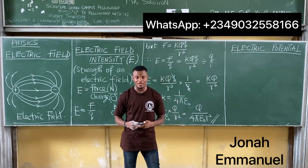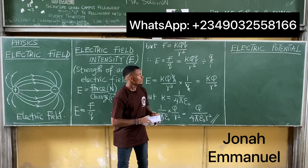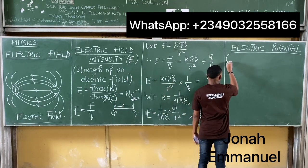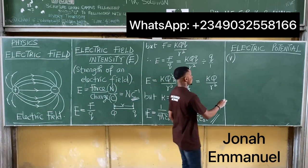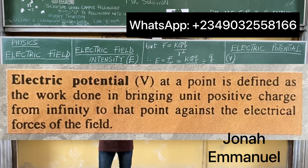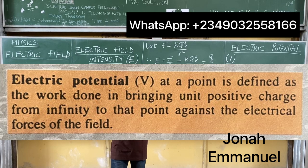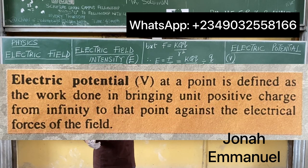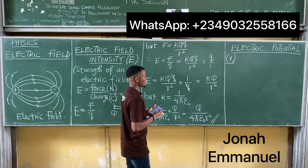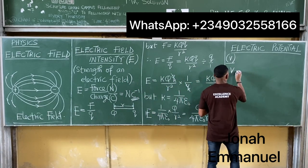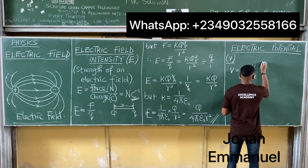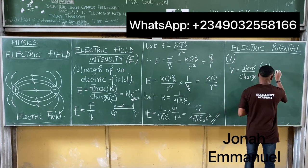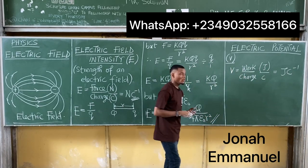Finally, let's look at electric potential. Electric potential is denoted by V. Electric potential V at a point is defined as the work done in bringing a unit positive charge from infinity to that point against the electrical forces of the field. Mathematically, electric potential V is equal to work done over charge. Work is measured in Joules and charge in Coulombs, so the SI unit is Joules per Coulomb.